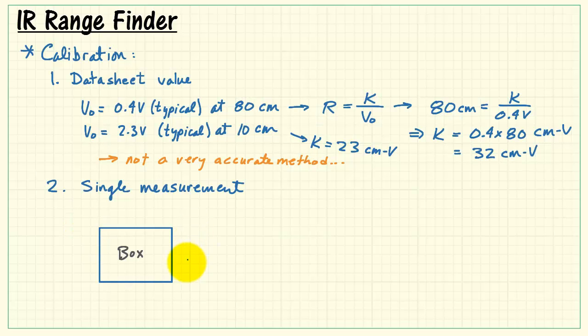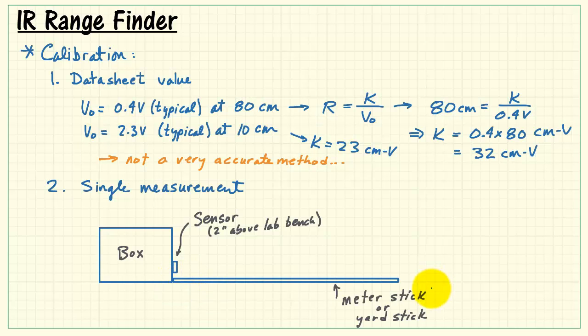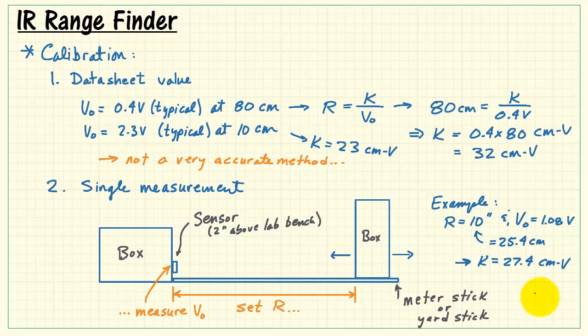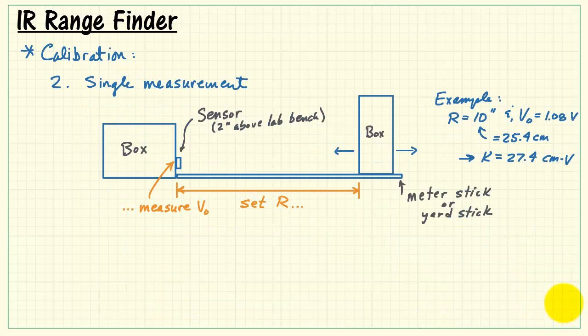Perhaps we could try taking an actual measurement from the device. I have a simple measurement apparatus here. I just have a cardboard box. I've taped the IR rangefinder sensor 2 inches above the lab bench. I have a meter stick, or you could use a yard stick here, just butt it up against the box. I have another box, which is mostly white, and that can serve as a reflective target that I can move back and forth. With this single measurement method, I'll carefully place the box at a known range, and then measure the resulting output voltage, VO. For example, I was using a yard stick with 10 inches and 1.08 volts measured. That means that the calibration constant is 27.4 centimeter volts, which we see is about midway between what we were getting from the datasheet values.